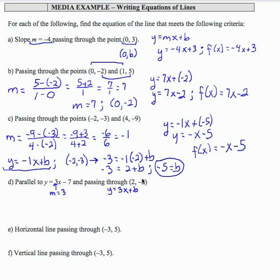I can put this ordered pair in now. Negative 5 equals 3 times—there's the x value—2 plus b. So I get negative 5 equals 6 plus b. Now if I subtract 6 from both sides, I get negative 11 equals b.